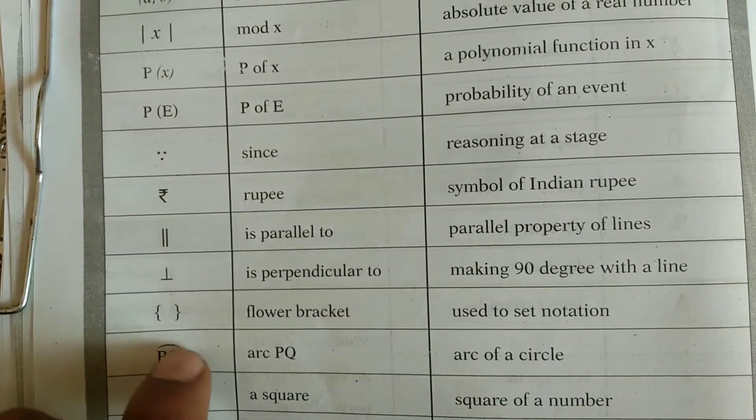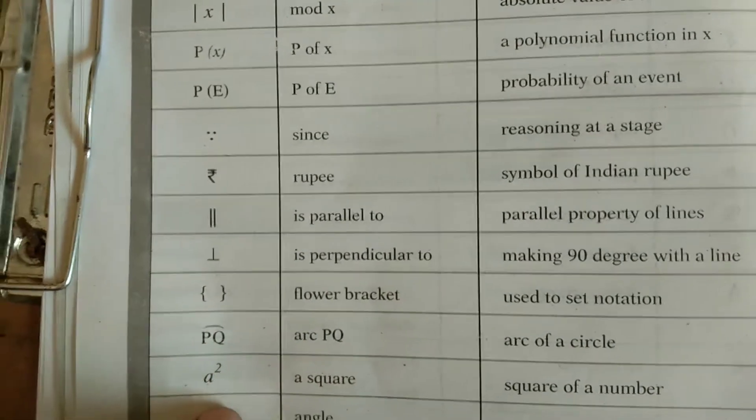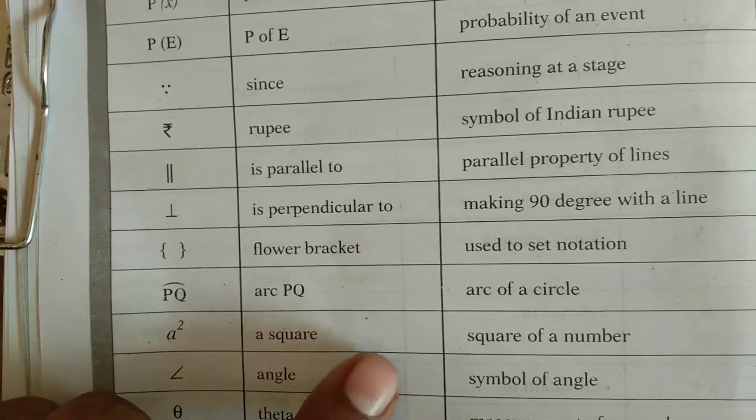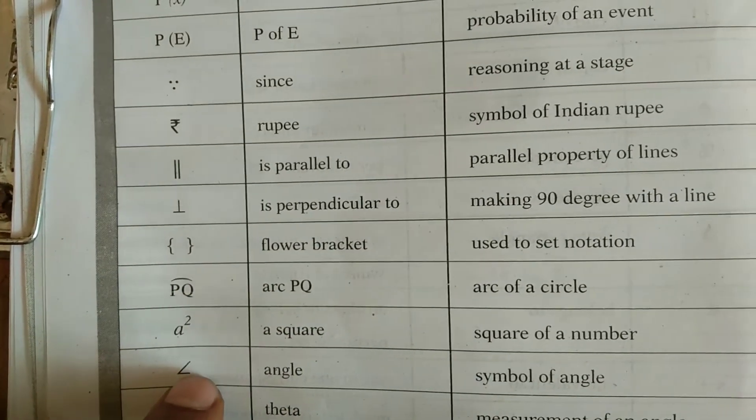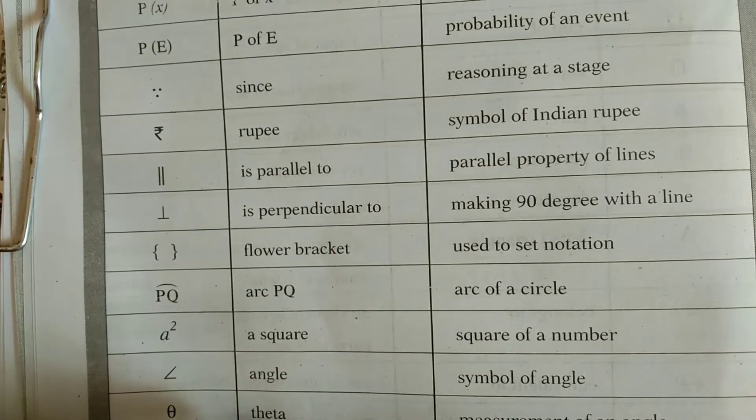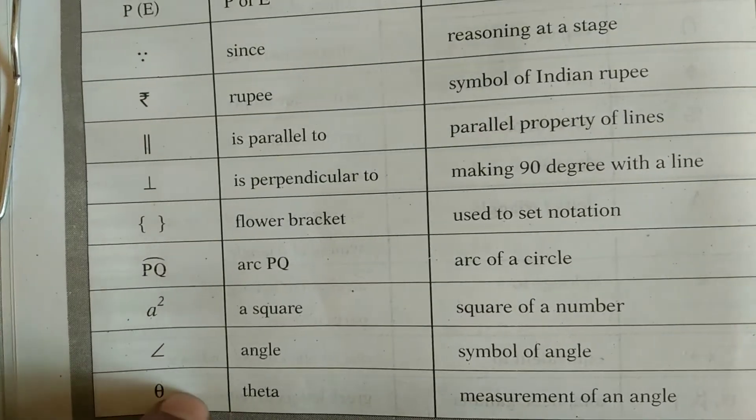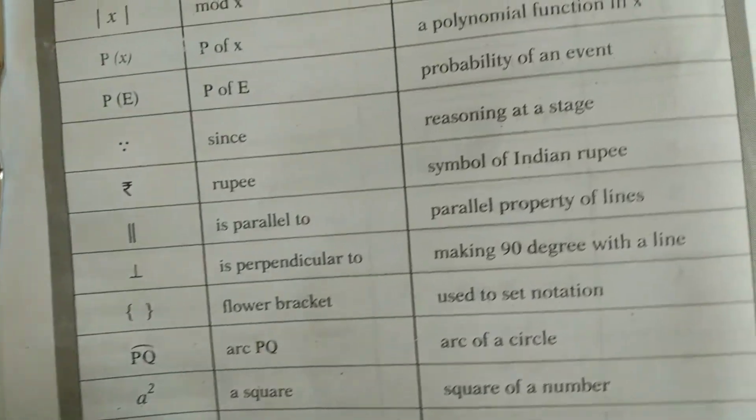This is a symbol for an arc, arc of a circle. This is a square, square of a number. This is the symbol of an angle, used to measure an angle. This is theta, measurement of an angle.